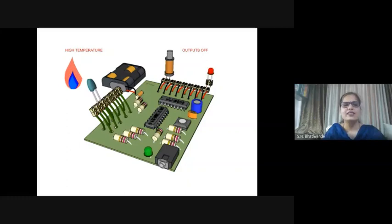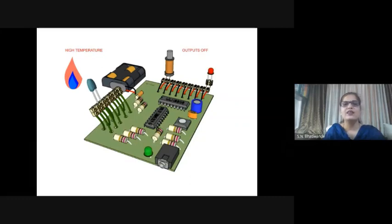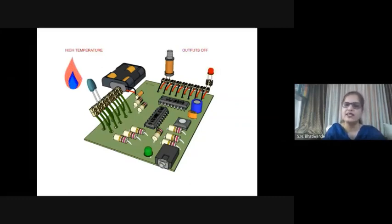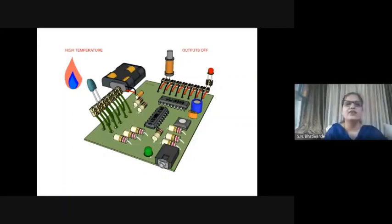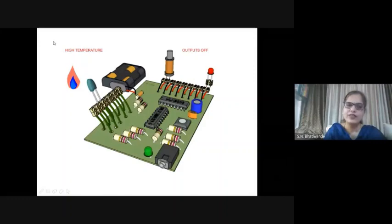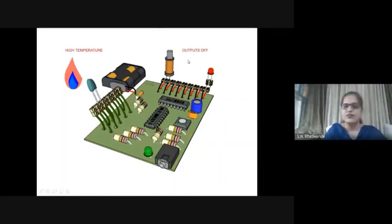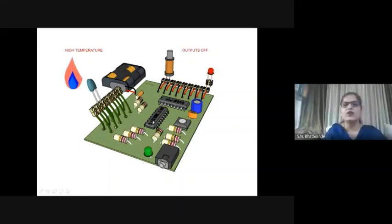We will see one example of an embedded system. Here, a temperature sensor is used and the output is operated according to it. A heater and LED are connected at the output side. When low temperature is detected, the output turns on - that is, the heater turns on. And if high temperature is detected, the output turns off. That programming is done in the microcontroller chip.